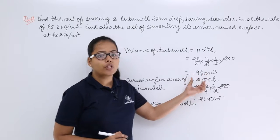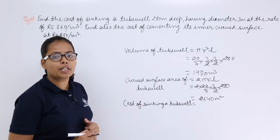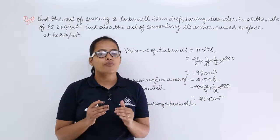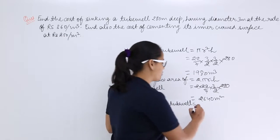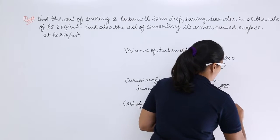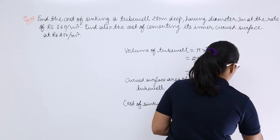You have the volume, you have the rate of sinking which is 3.6 per meter cube. So what you'll do? You'll multiply this rate with the volume to find out the cost. It is 3.6. So this answer will be 7128 rupees.